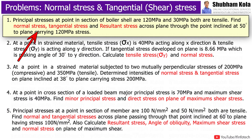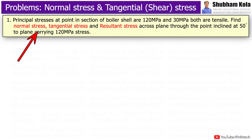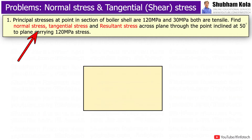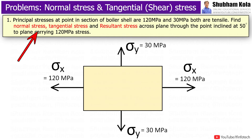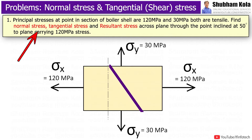Let's start our first problem. The statement is: the principal stresses at a point in a section of a boiler shell are 120 MPa and 30 MPa, both tensile. Find normal stress, tangential stress, and resultant stress across a plane through the point inclined at 50 degrees to the plane carrying 120 MPa stress.